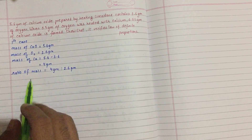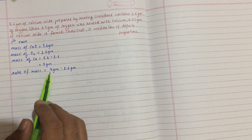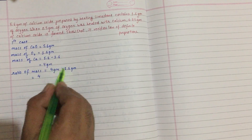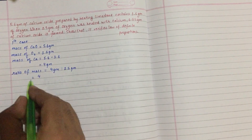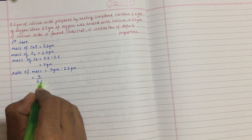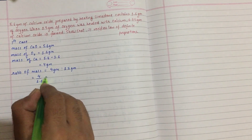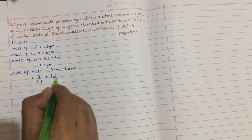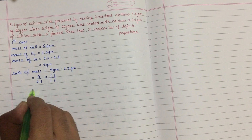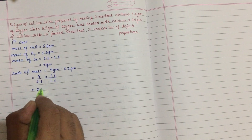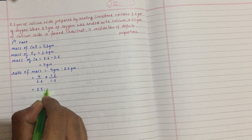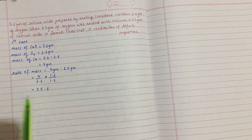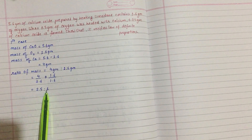We simplify by dividing by 1.6: 4 divided by 1.6 gives 2.5, and 1.6 divided by 1.6 gives 1. So the mass ratio of calcium to oxygen in the first case is 2.5 : 1.